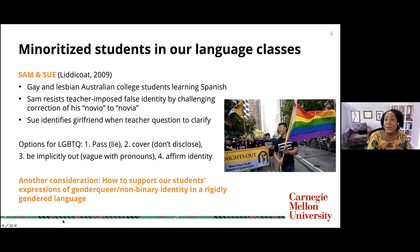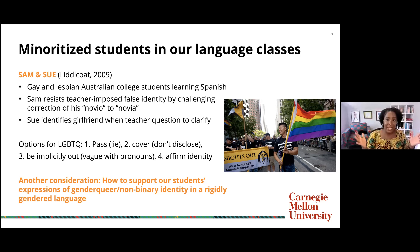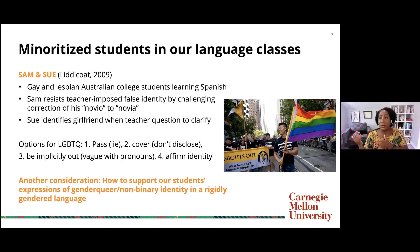Who are the minoritized students in our language classes? We came to talk about what we can do to keep them in mind, to center them, and to bear in mind equity-mindedness, inclusivity, and anti-racism. For example, we have students who don't conform to the heteronormative regime that we uphold in the interactions and materials of our language classes. Lydicote looked at gay and lesbian college students learning Spanish in Australia and examined their individual experiences.